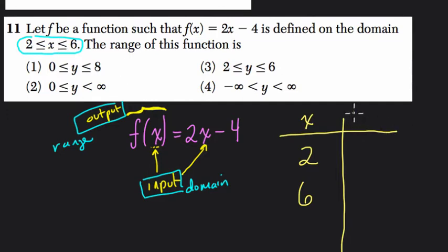Now y, here the output, or f of x, always equals whatever x is times 2 and then minus 4. So let's plug in 2 for x and see what happens. 2 times 2 minus 4. That's just 4 minus 4 or 0.